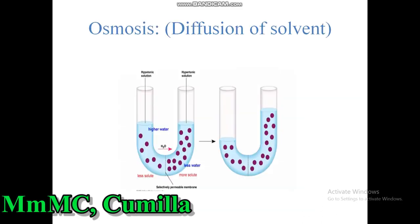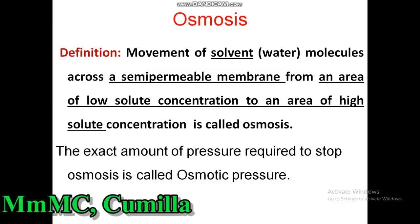Now let us come to the topic of osmosis. Osmosis means diffusion of solvent molecules — solvent meaning water. Osmosis is defined as the movement of solvent molecules, i.e. water molecules, across a semipermeable membrane from an area of low solute concentration to an area of high solute concentration. The exact amount of pressure required to stop osmosis is known as osmotic pressure.